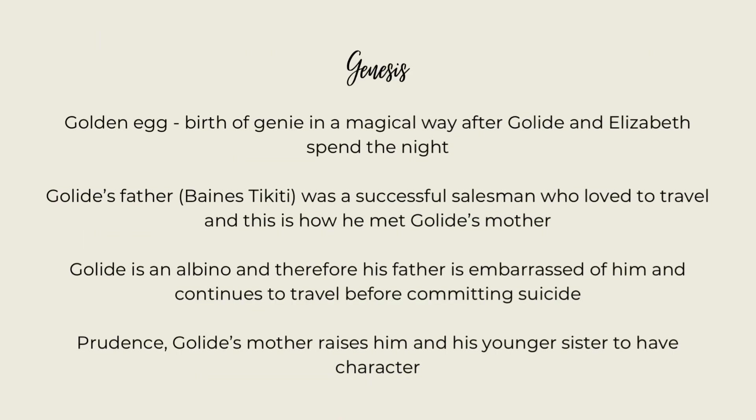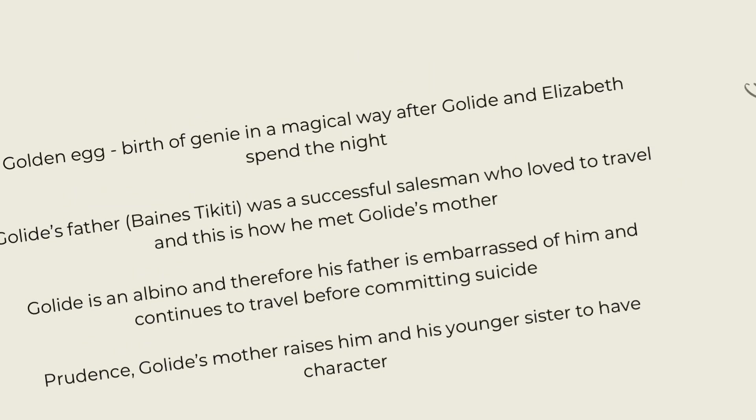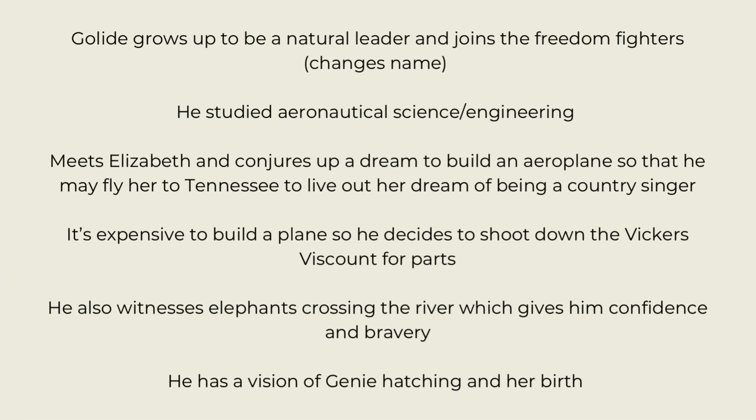Prudence, Golida's mother, raises him and his younger sister to have character. Golida grows up to be a natural leader and joins the freedom fighters. He changes his name to Golida Gumida, as he was initially named Livingstone Stanley Takiti. He studied aeronautical science and later meets Elizabeth, conjuring up a dream to build an aeroplane to fly her to Tennessee so she can live out her dream of being a country singer.